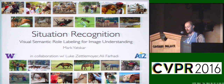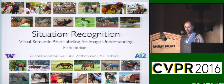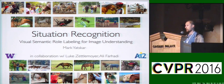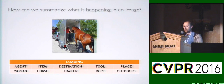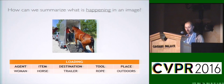Hi, I'm Mark, and I'm going to be talking about our paper, Situation Recognition: Visual Semantic Role Labeling for Image Understanding. The central question in this work is, how can we summarize what's happening in an image?